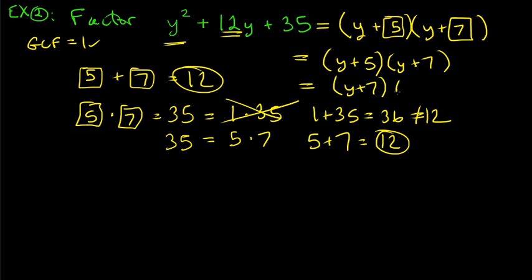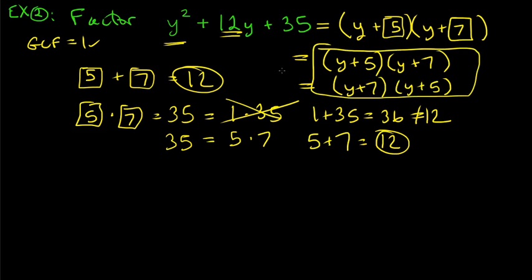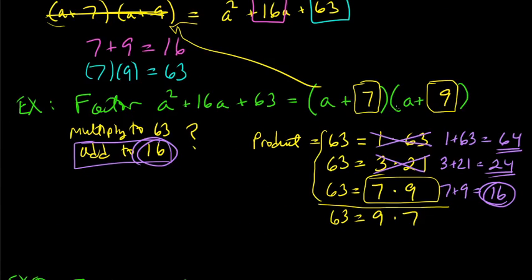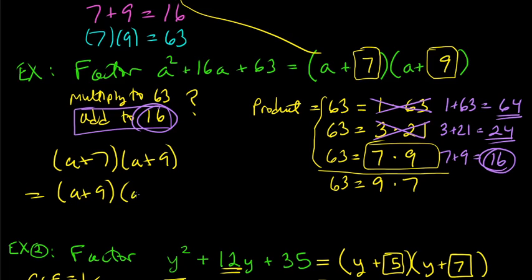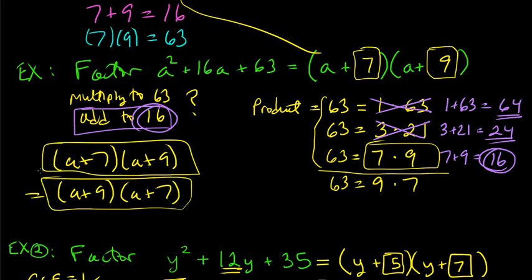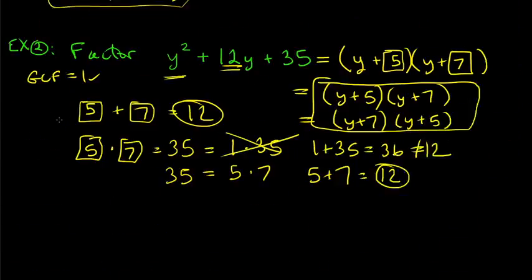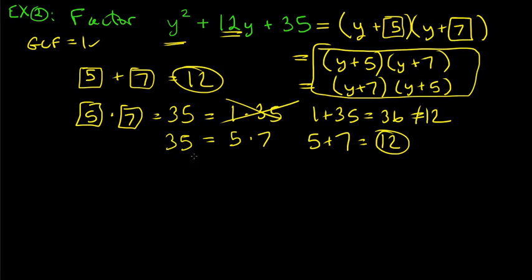You can also write it as (y + 7)(y + 5) — order doesn't matter when multiplying. Similarly in the first example, (a + 7)(a + 9) is the same as (a + 9)(a + 7). Let's try another example — this one will be a little harder.